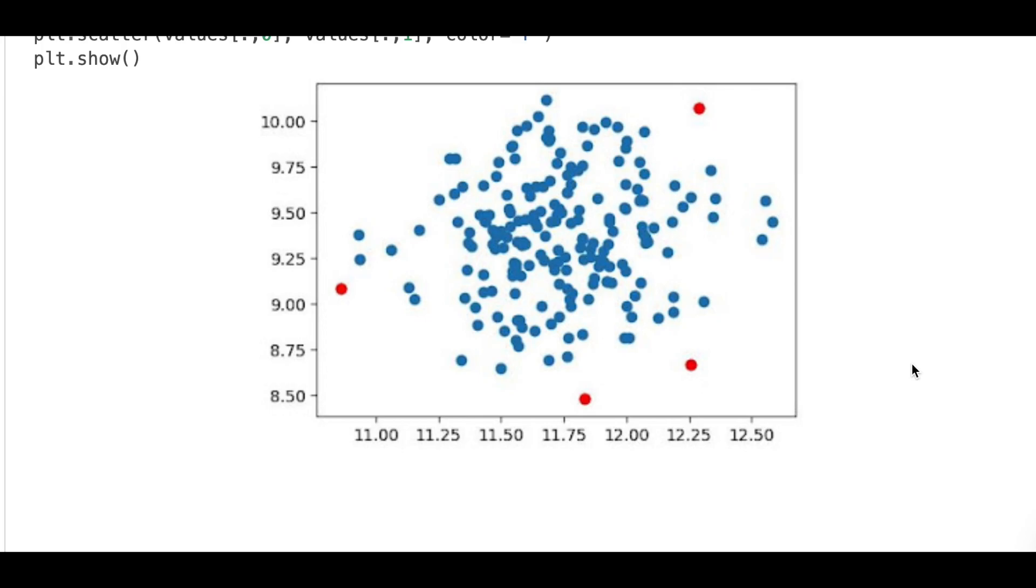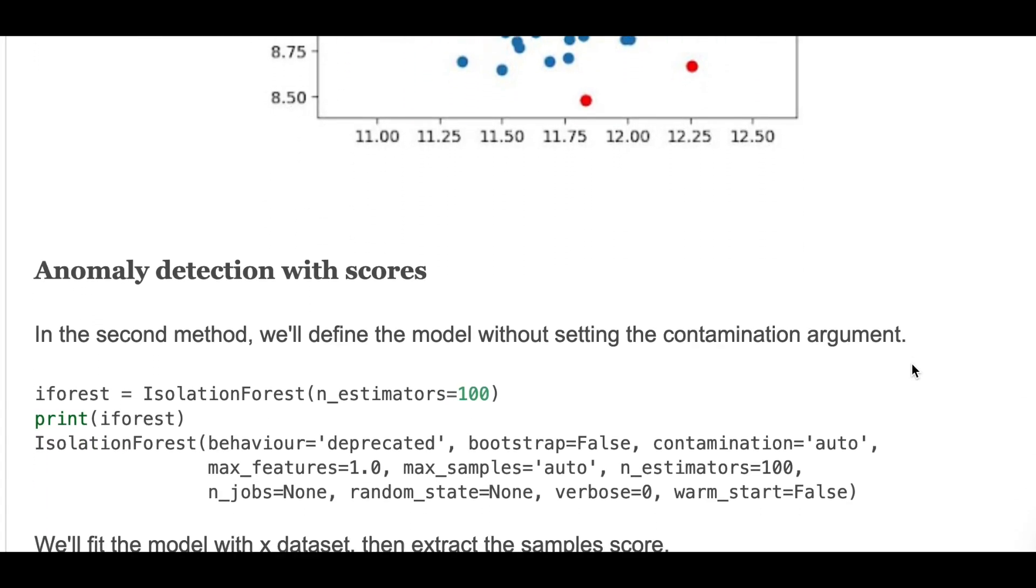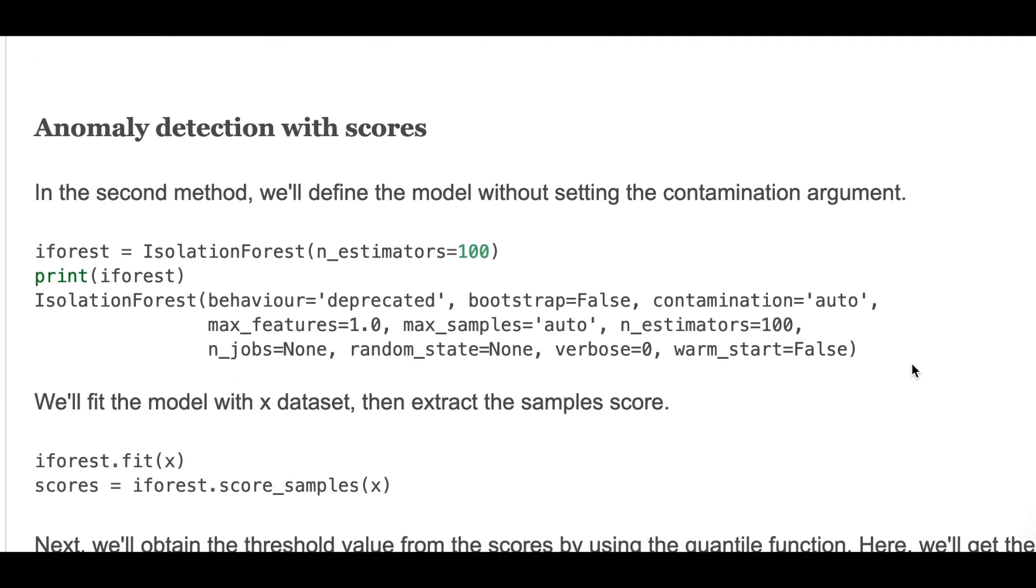Anomaly detection with scores. In this method, we'll define the model without setting the contamination argument, just only define the number of estimators.